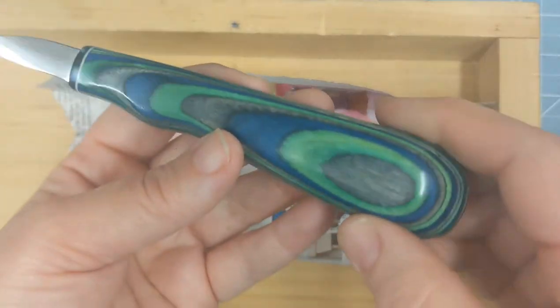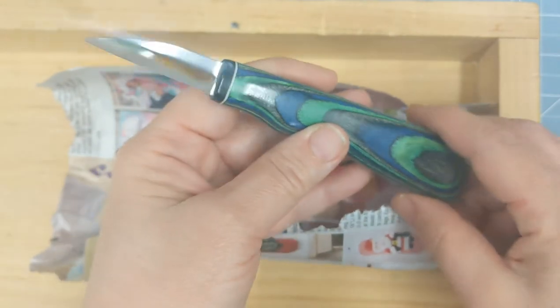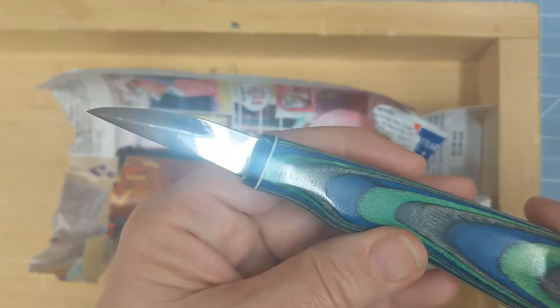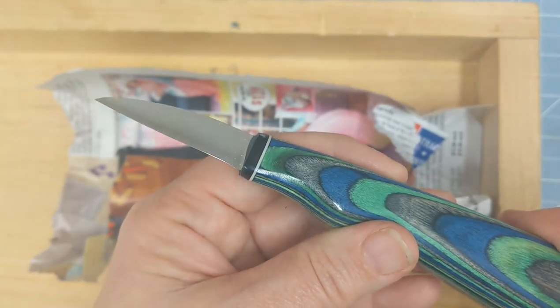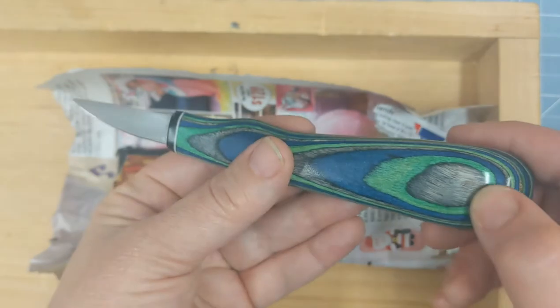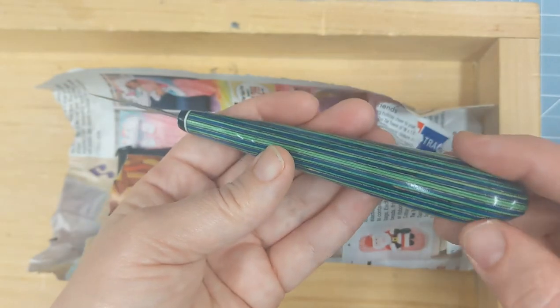So let me see the handle again. So there's the blade. Isn't that neat? Sorry about the shiny light. That's the handle. Isn't that pretty?